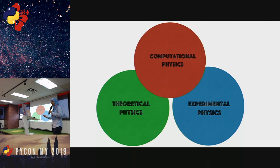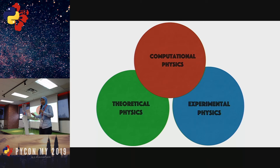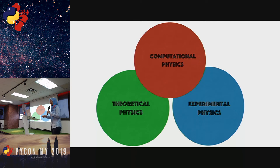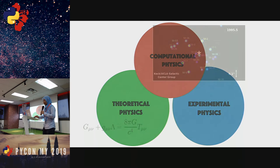All you need for computational physics is a computer, a laptop, or maybe a smartphone. Sometimes experimental physics requires instruments that are far more expensive. That said, computational physics is not always cheap either — it can be expensive if you need to use high-performance computing, which is a different matter entirely.